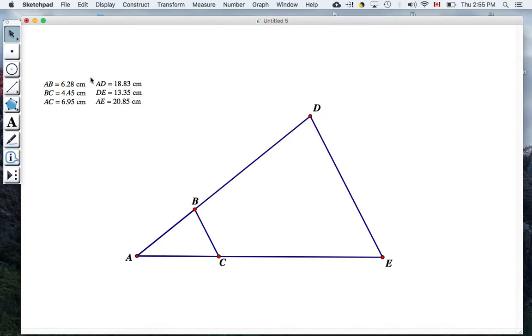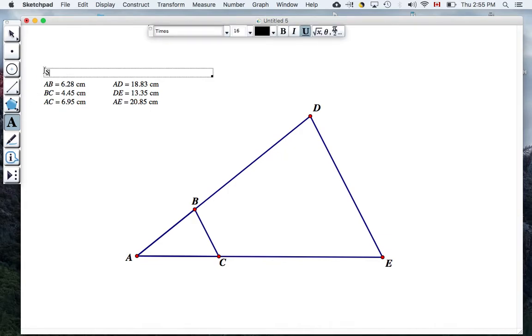So there I've got my smaller triangle and my bigger triangle and their distances. Something else you can do with Geometer Sketchpad is using the text tool over here, you can clean up your work by adding some titles. So I'm just going to select text and above this I'll put down, rather than calling it small triangle, I'll call it triangle ABC.